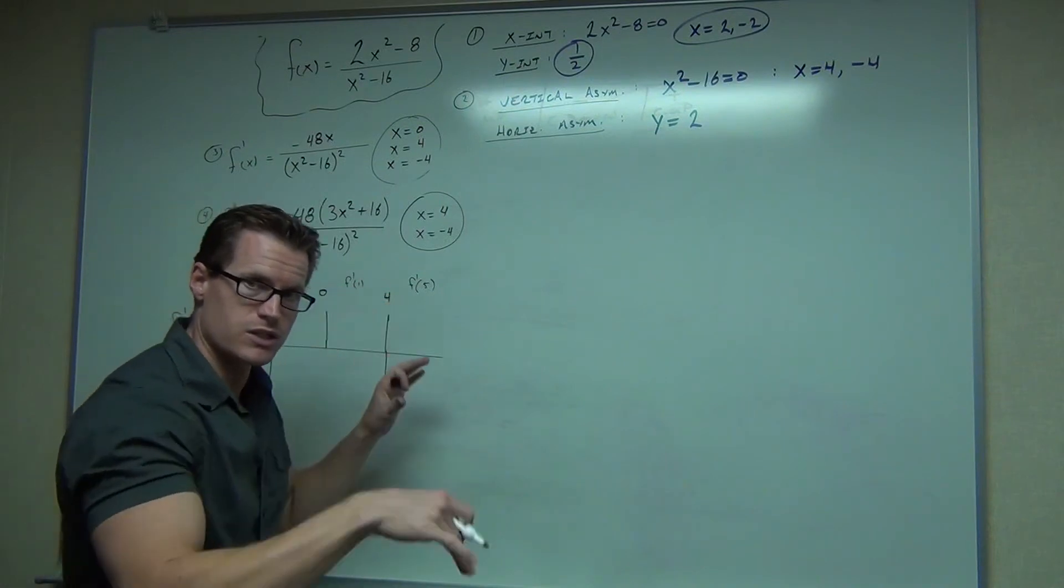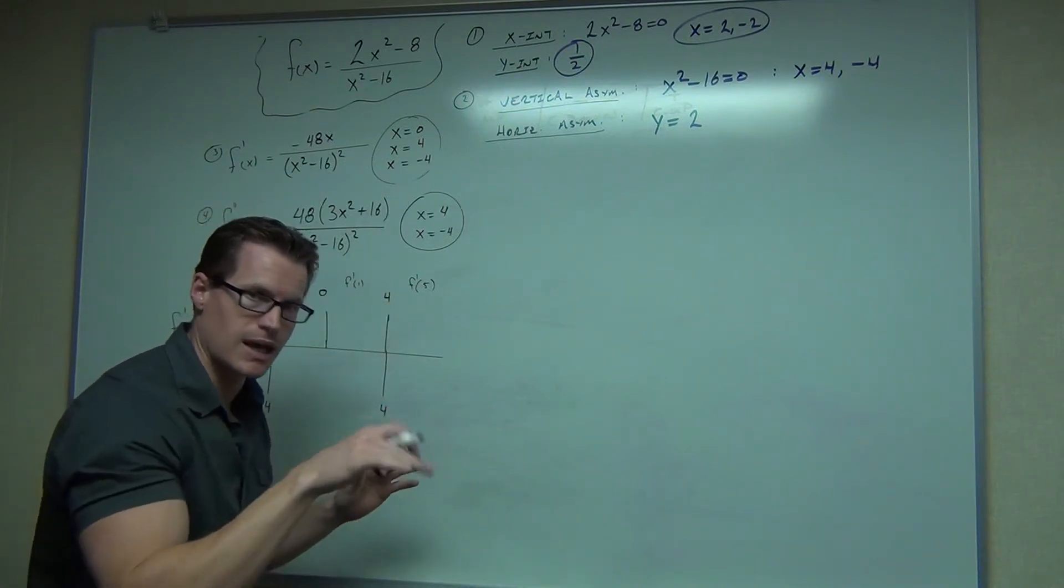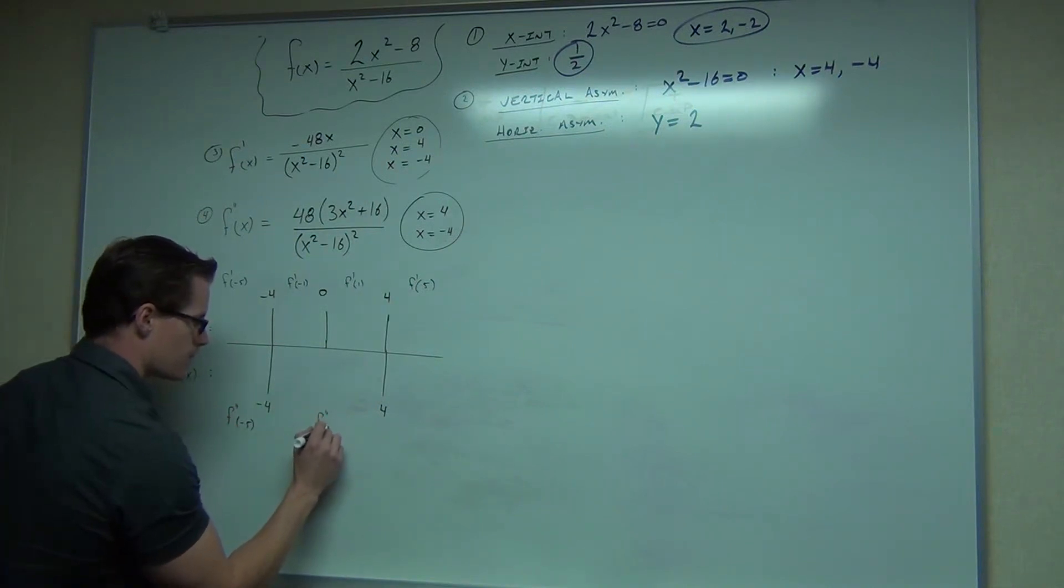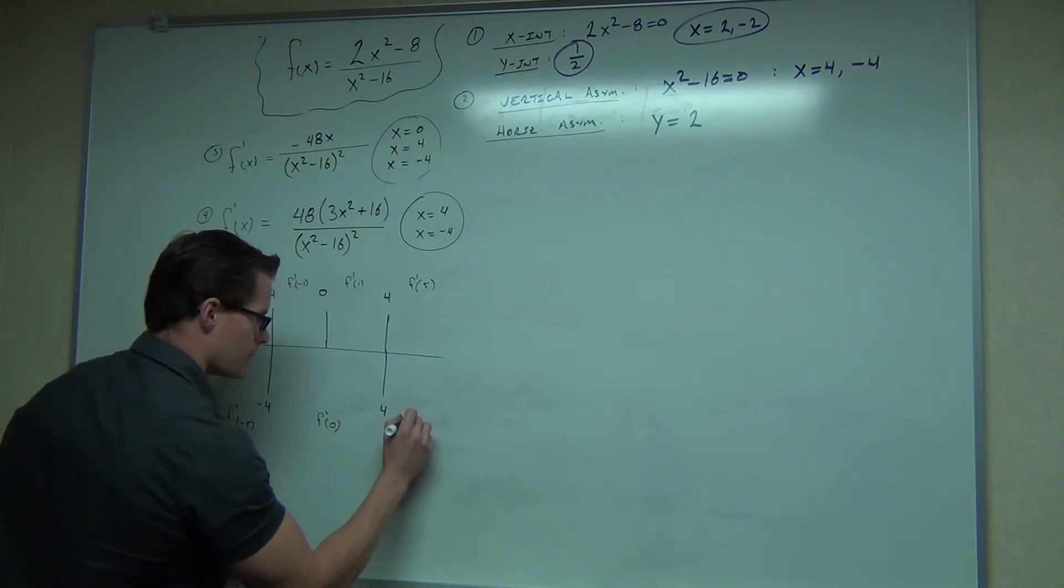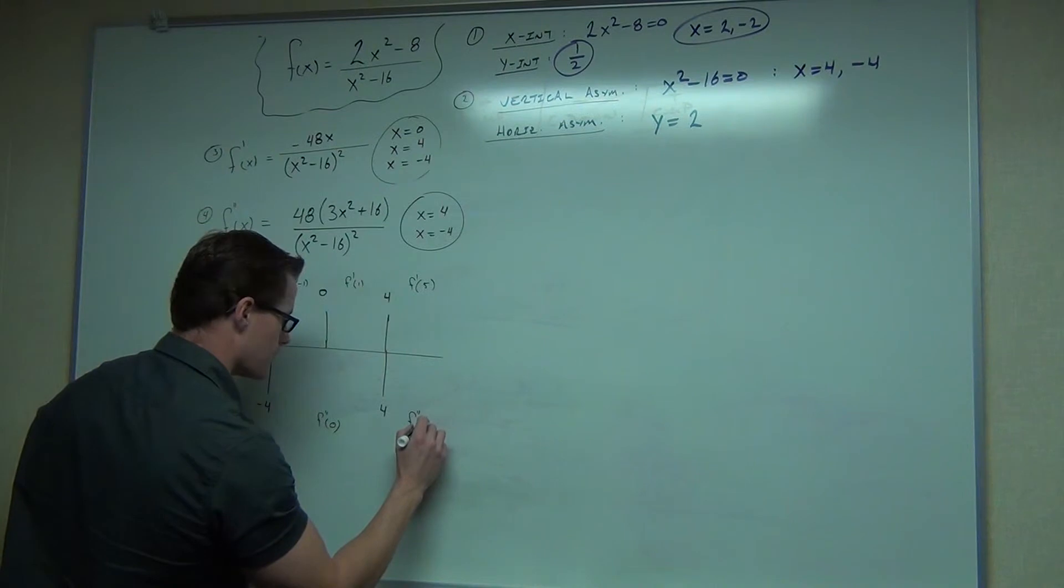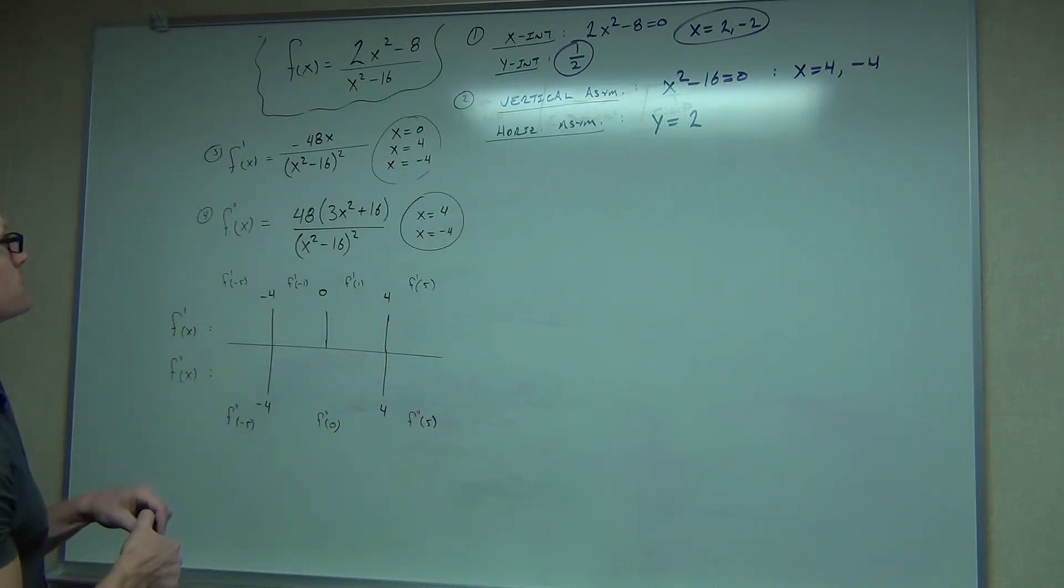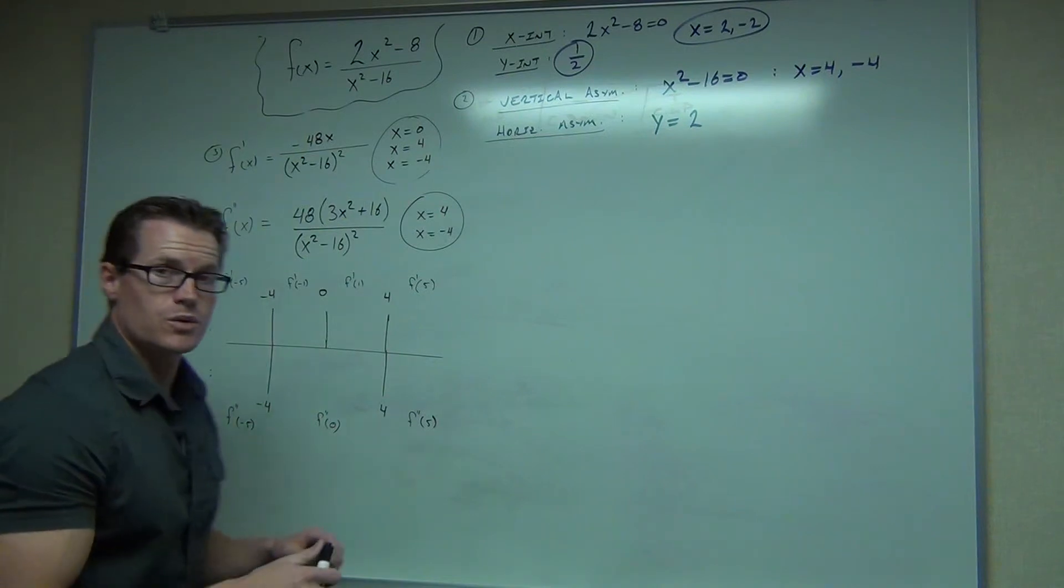On the bottom, we're taking second derivative. So concavity. And we'll test some similar points, but make sure you put them in the second derivative, not the first, not the original. Original function gives you points on the graph. First derivative gives you increasing or decreasing. Second derivative gives you concavity.